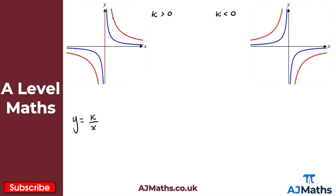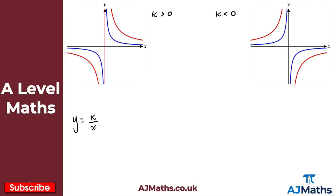Let's take a look at the two different blue curves. On the left-hand side, we can see this blue curve, and on the right-hand side, we've got this curve again in blue. On the left-hand side, this is a sketch of Y equals 1 over X, and on the right-hand side, that would be a sketch of Y equals minus 1 over X.